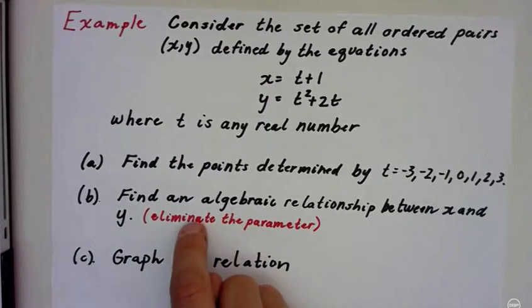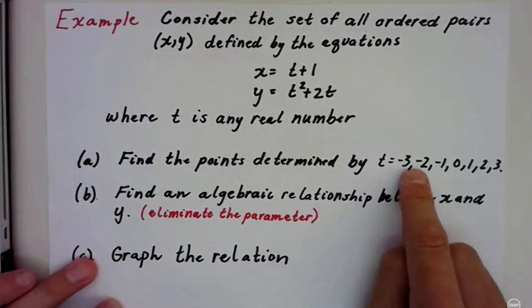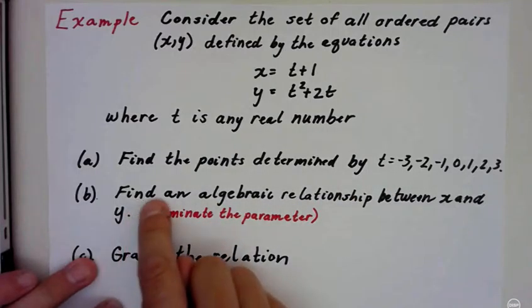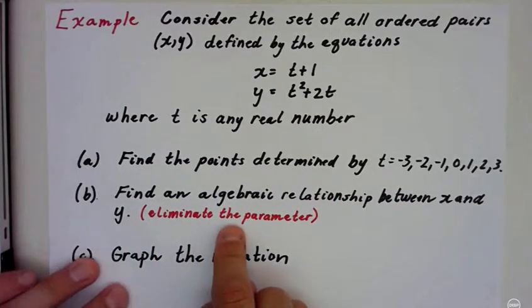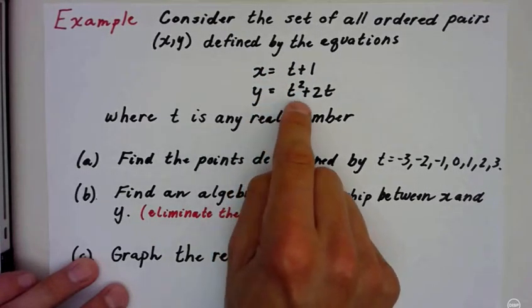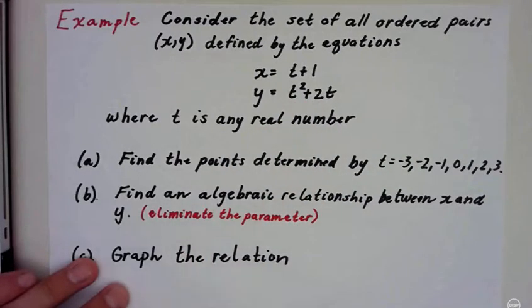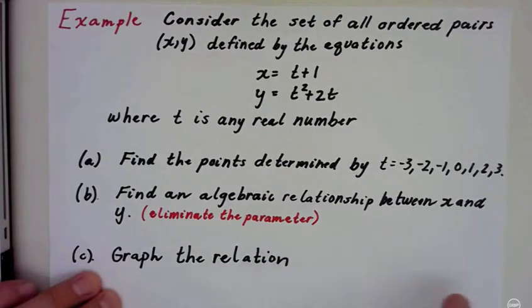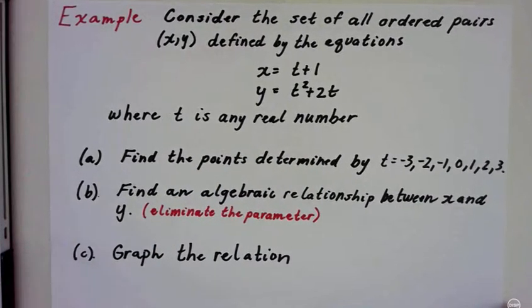We're going to do three things today. We're going to find the points determined by t equals negative 3 to 3, find an algebraic relationship between x and y and eliminate the parameter. Basically what we're going to do is take these two equations and make it y equals, we're going to put y in terms of x like we normally see. And then finally we're going to graph the relation. So these are kind of the big three things that you're going to have to know about parametric equations.